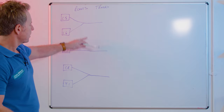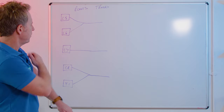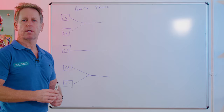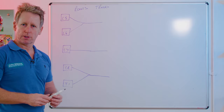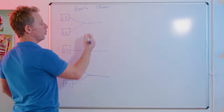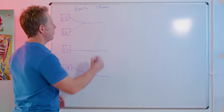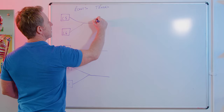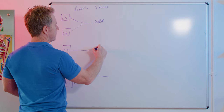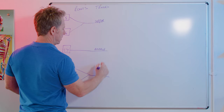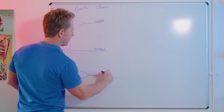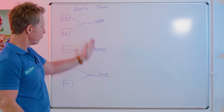These form the trunks. The trunks — we've got an upper trunk, a middle trunk, and a lower trunk. You can also call them superior and inferior, but it's probably easier to say upper, middle, and lower. So now five roots have become three trunks.